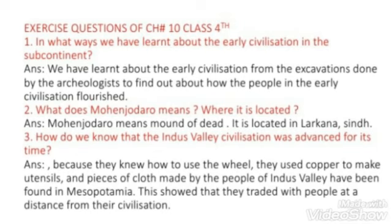How do we know that the Indus Valley civilization was advanced for its time? Because they knew how to use the wheel, they used copper to make utensils, and pieces of cloth made by the people of Indus Valley have been found in Mesopotamia, showing that they traded with people at a distance from their civilization.